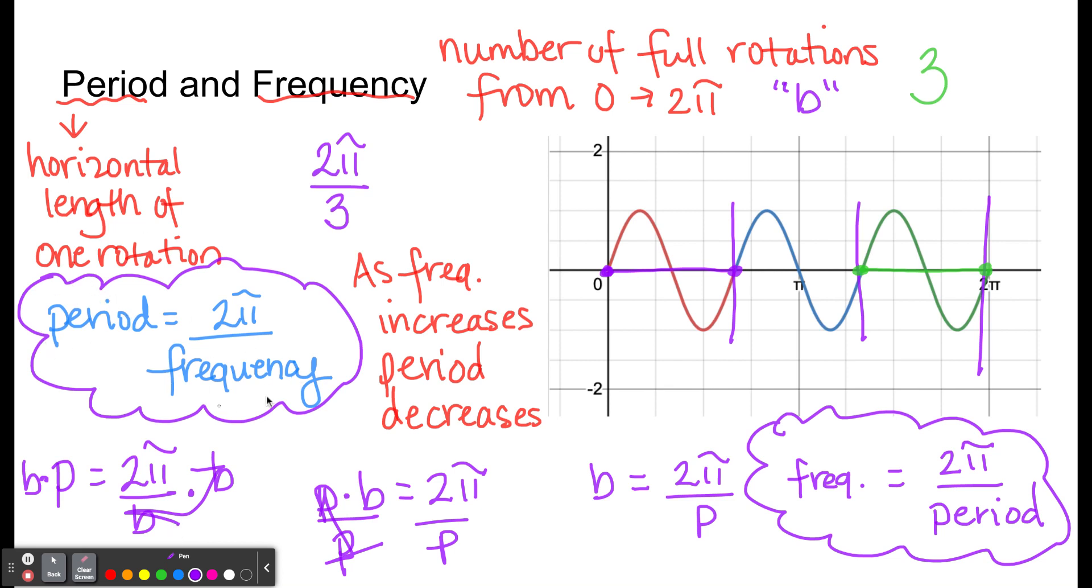So if you know the frequency, you can do 2π divided by the frequency to find the period. And if you know the period, you could do 2π divided by the period to give you the frequency.